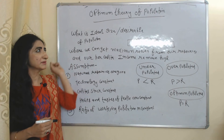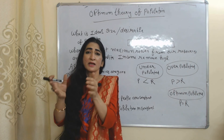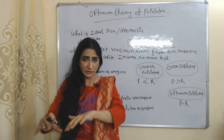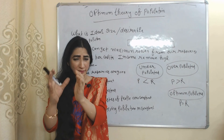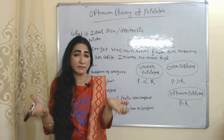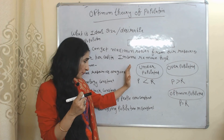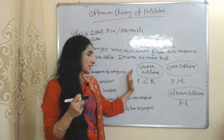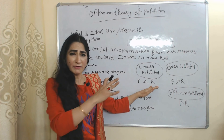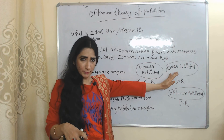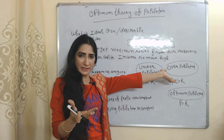Now we will see the optimum theory of population. This theory talks about the desirable size of population where we get maximum return from our existing resources and our per capita income is also very high. This theory discusses three conditions: under-populated, where population is less than resources so resources are not properly utilized and per capita income remains low; over-populated, where resources are less than population so resources are over-utilized and per capita income remains low.